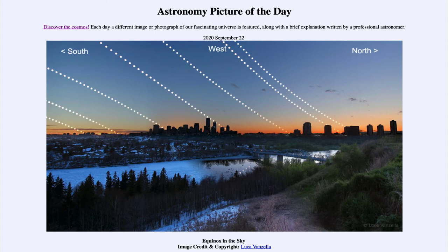Today is the autumnal equinox — the first day of fall for those in the northern hemisphere. On that day, the sun will set due west. You can see that right towards the middle here, as it disappears behind the Edmonton skyline, the sun is setting pretty much due west.